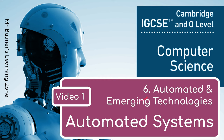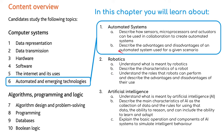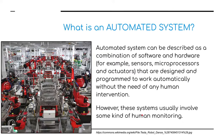Welcome to the first video for topic six, automated and emerging technologies. We're going to be looking at automated systems. This is for the IGCSE computer science course from Cambridge. This topic is broken down into three parts: automated systems, robotics, and artificial intelligence.